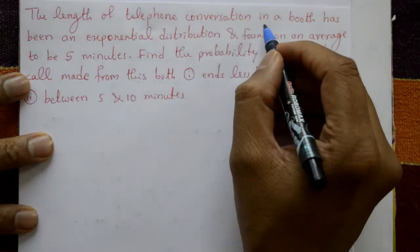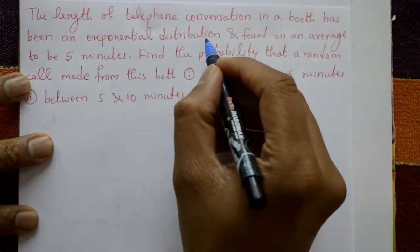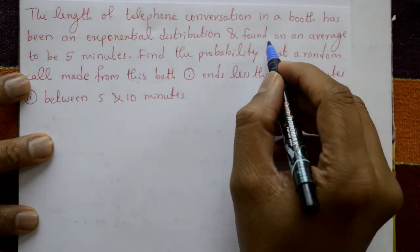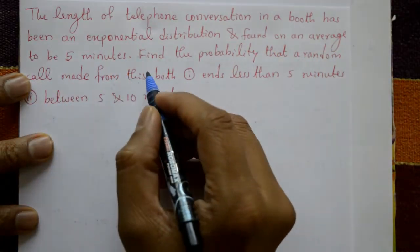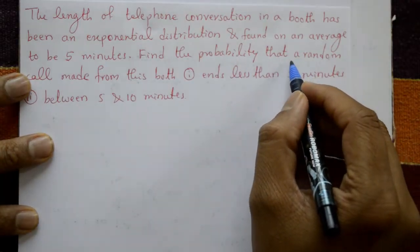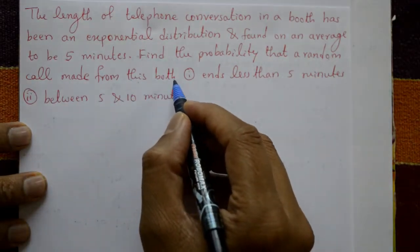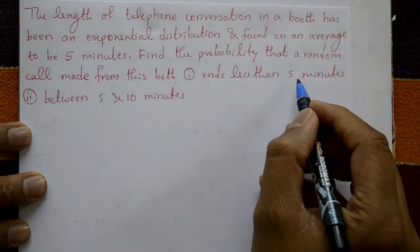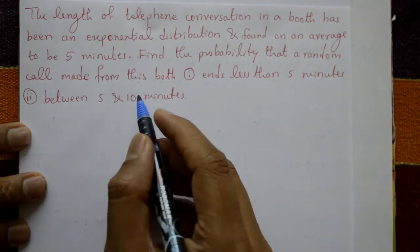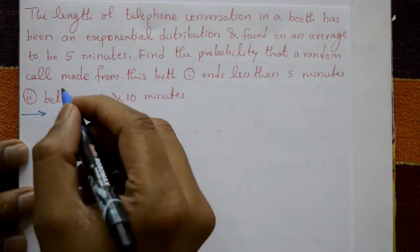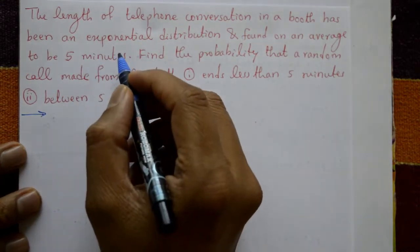The length of telephone conversation in a booth has an exponential distribution and is found on average to be 5 minutes. Find the probability that a random call made from this booth: Case 1 ends in less than 5 minutes, Case 2 ends between 5 and 10 minutes. This is a given exponential distribution.